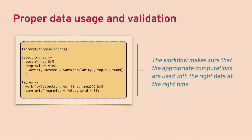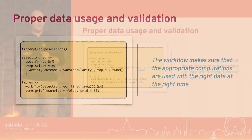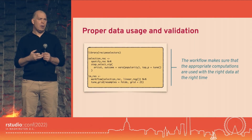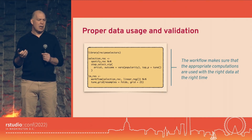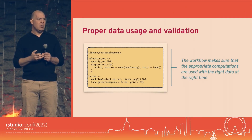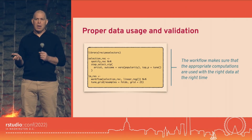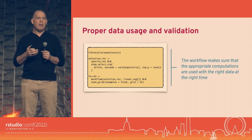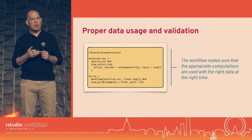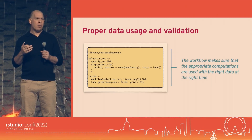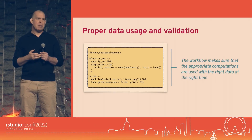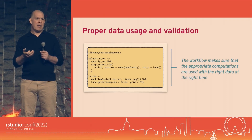We can take our new recipe built on top of the previous Spotify recipe, put that in a workflow with linear regression, and use the tune_grid() function to do a grid search to find a good value for how many predictors to use. This is how you do feature selection in TidyModels. The thing is, the way we've set up resampling and data splitting and the way we combine preprocessor with model — it's nearly impossible to accidentally do the wrong thing and inappropriately validate or estimate things from your data.